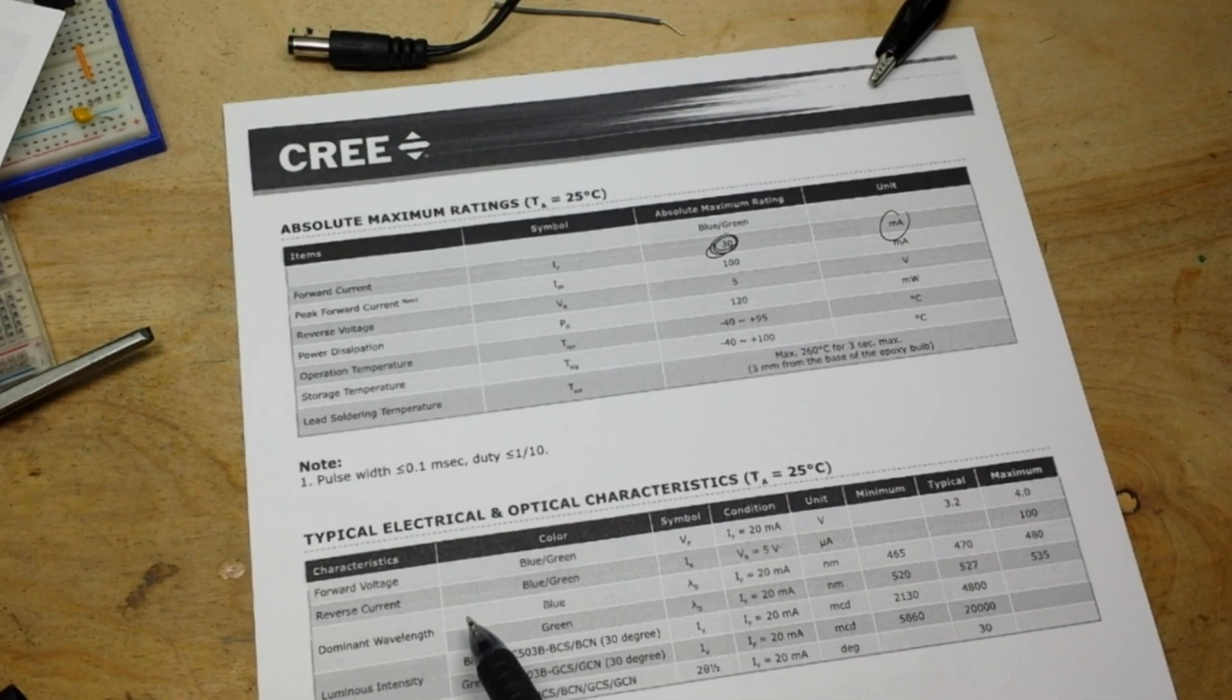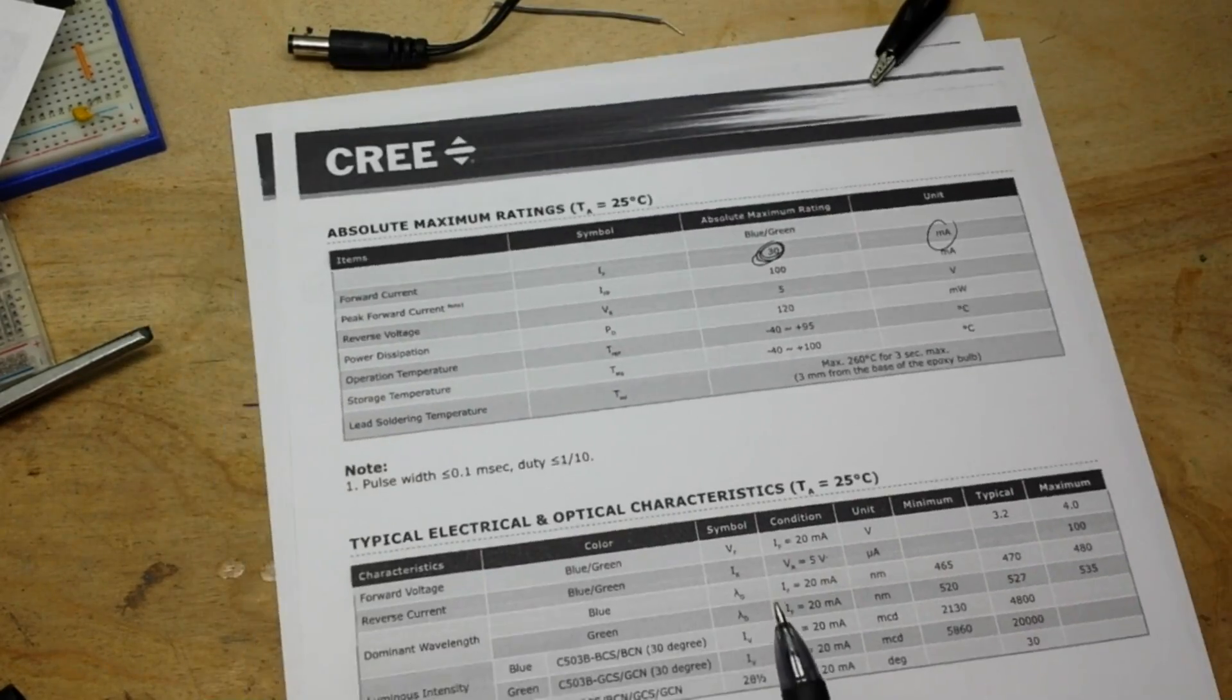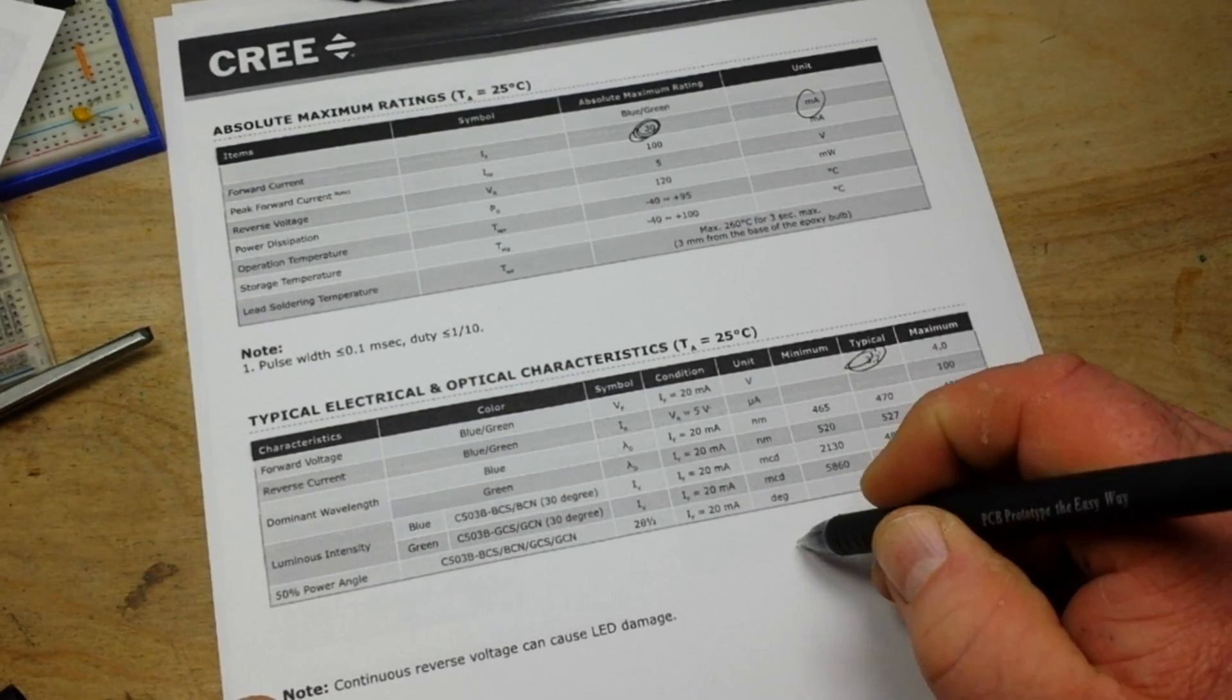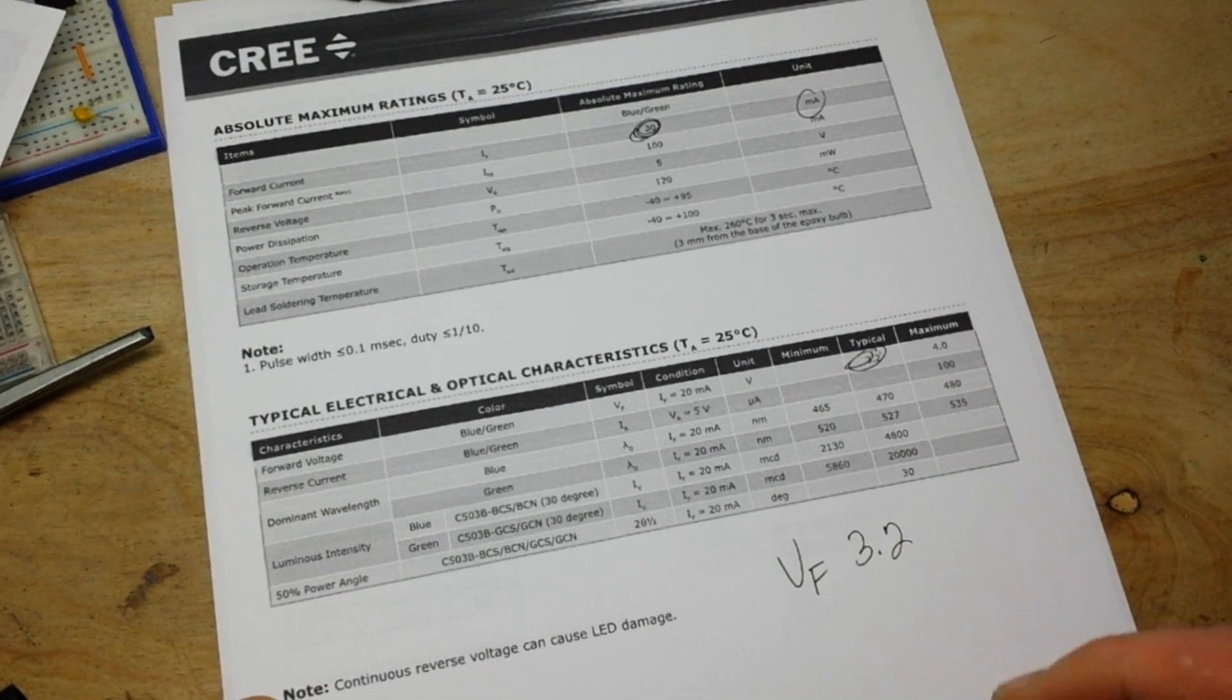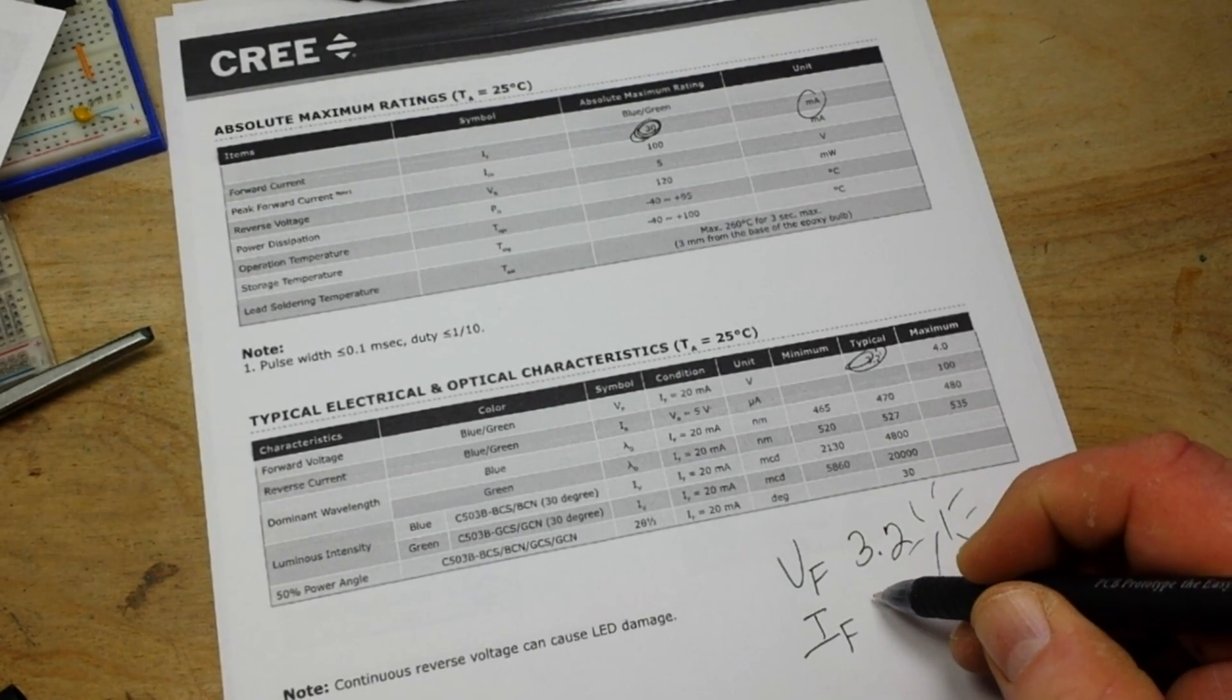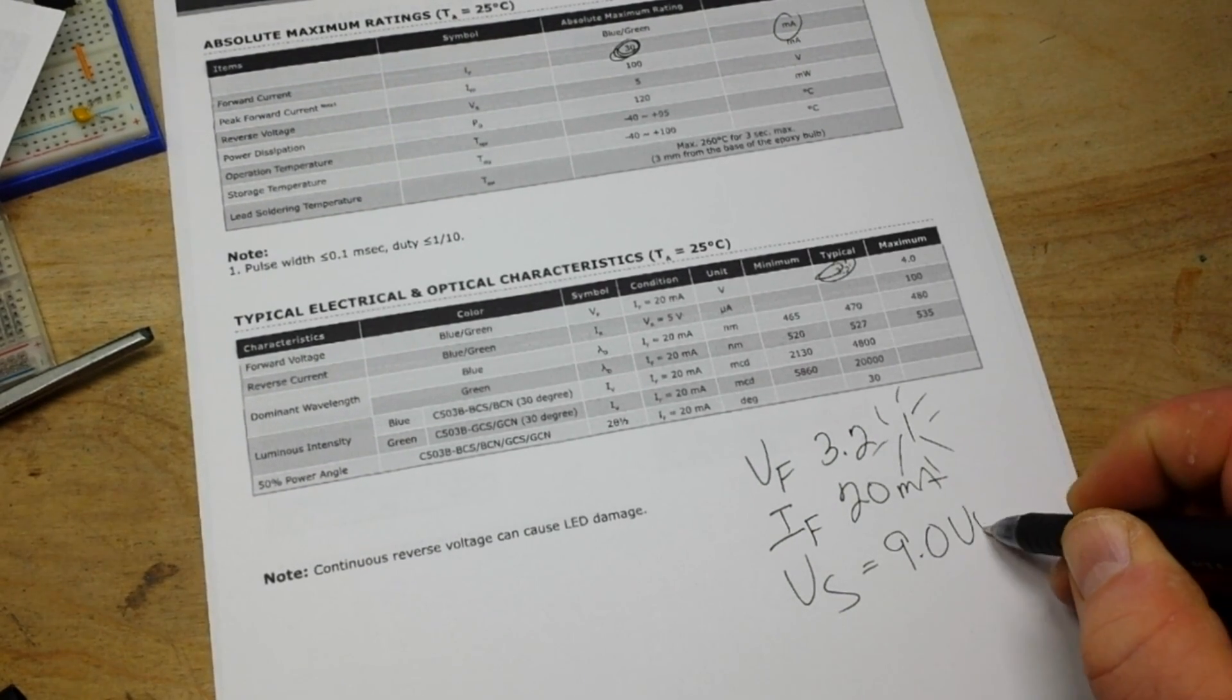Our typical forward voltage is 3.2 volts. That's called the Vf, 3.2 volts. And that is the voltage at which the LED will begin to emit light. You need to know that. And then you need what's known as the If, the forward current. In this case, we're just going to say 20 milliamps. And then you also need to know Vs, which is your supply voltage. And in our case, it's 9 volts DC.